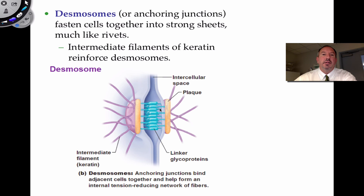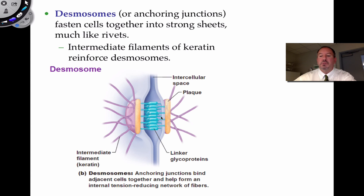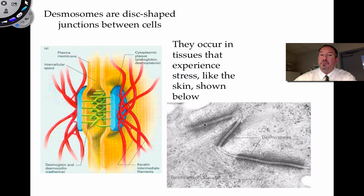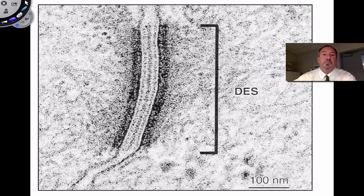Desmosomes are similar but a bit more complicated. They're made up of glycoproteins which connect cells and are sort of like rivets — metal connections between sheets of metal holding them together. There are filaments going inside the cell made of a protein called keratin. Basically they're anchoring junctions that anchor and fasten cells together, making them really strong. The skin has many desmosomes because those cells experience a lot of stress.